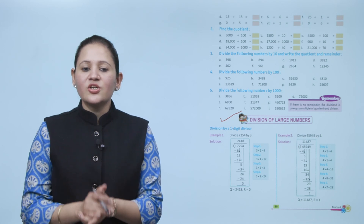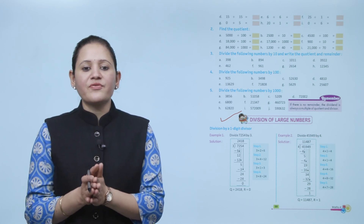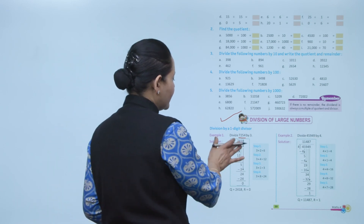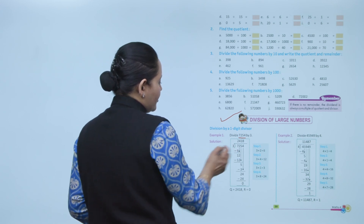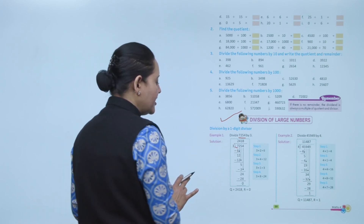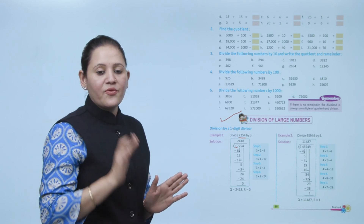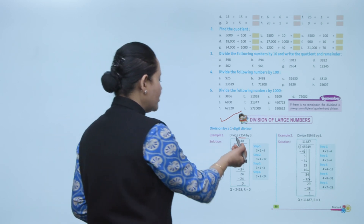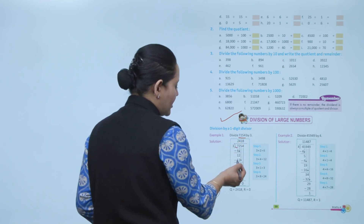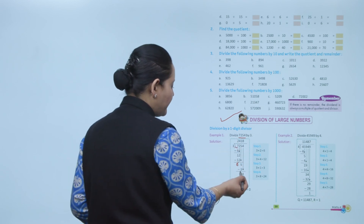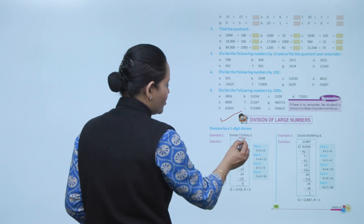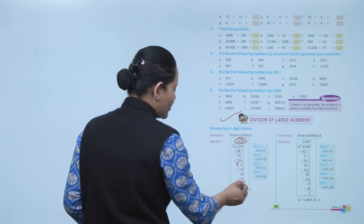Division by a one-digit divisor: divide 7254 by 3. Write the dividend inside the bracket and the divisor outside. Start from the leftmost digit — 7 is in the thousands place. 7 divided by 3: 3 twos are 6, remainder 1. Bring down 2 to get 12. 3 fours are 12, remainder 0. Bring down 5, then 3. The quotient is 2418 and remainder is 0.